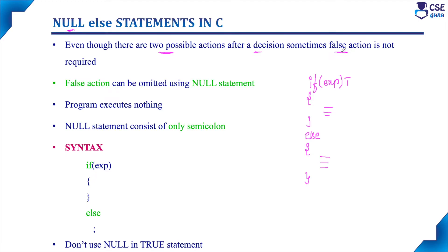If the FALSE action is not required, we can use a simple IF statement, but programmers commonly avoid that. The basic IF statement programmers prefer is the IF-ELSE statement. So, as a general practice in C programming, if the ELSE part is not required, programmers simply use the NULL ELSE statement — they specify the ELSE part as a NULL statement. Using this NULL statement, the FALSE action can be omitted.